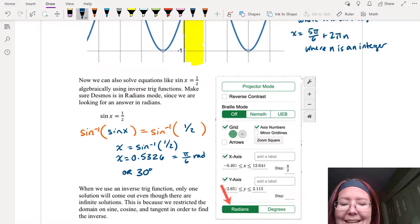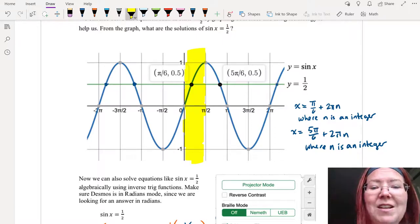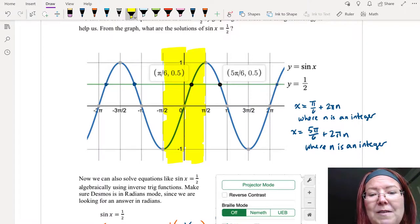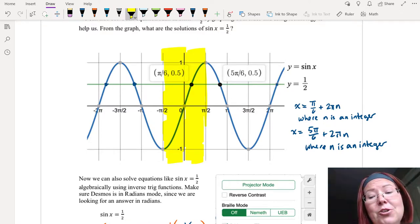Now we only got one answer here, pi over 6 radians. And up at the top we can see that there are multiple answers. So the problem is that we're only getting the answer where the domain was restricted. And where the domain was originally restricted for sine was between negative pi over 2 and pi over 2. Remember that? And so there's only one place within that domain that we have an answer, and that's at pi over 6. So if you need to give all the answers, you're going to have to reason out where the other answers are and then write them in a general form.